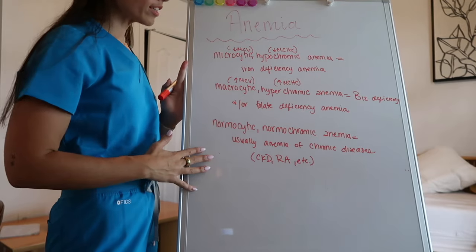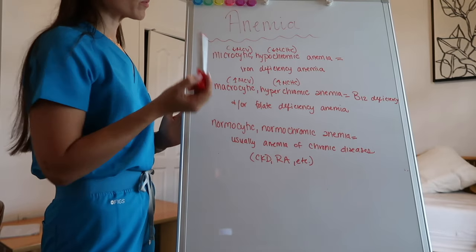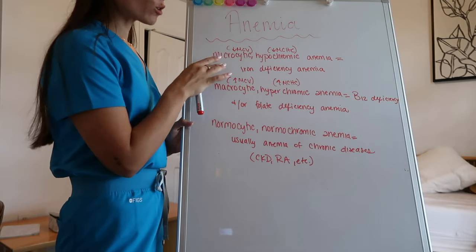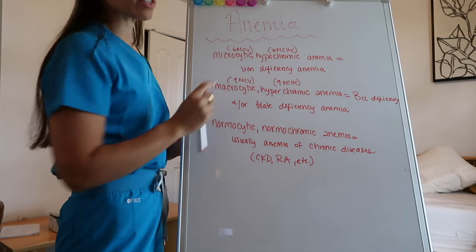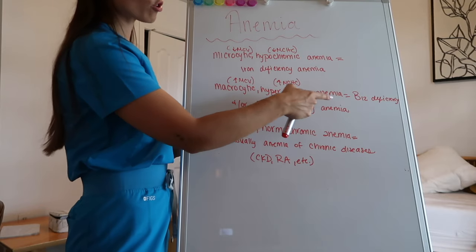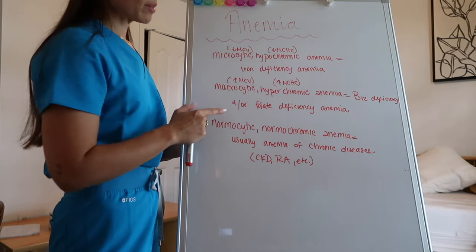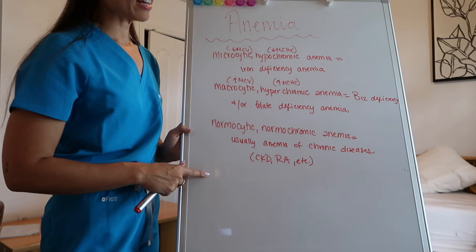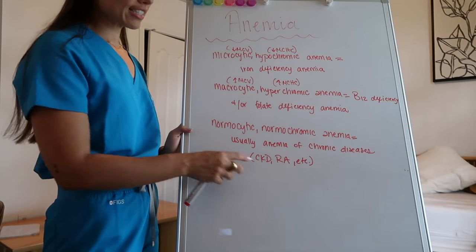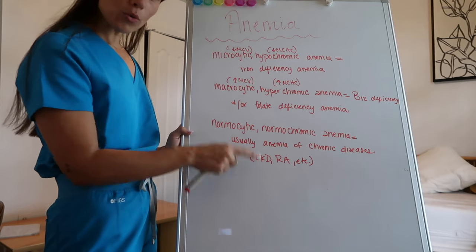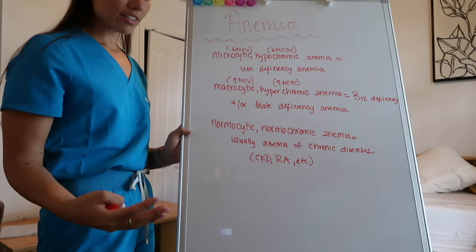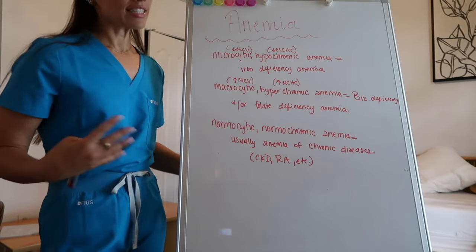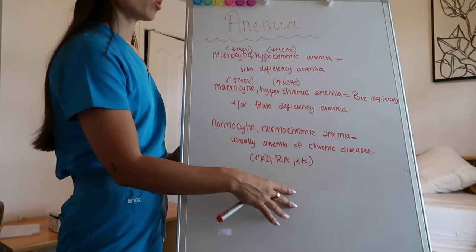I'm going to write this out for you so you can take a screenshot and really sit with this information. So one more time: a microcytic hypochromic anemia is very consistent with iron deficiency. A macrocytic hyperchromic anemia is very consistent with a B12 and/or folate deficiency. And a normocytic normochromic anemia is very consistent with chronic diseases such as chronic kidney disease — think erythropoietin, which is the first step to making red blood cells and is produced in the kidneys — and rheumatoid arthritis.